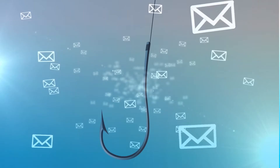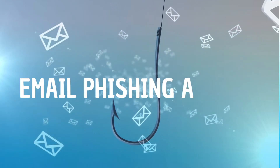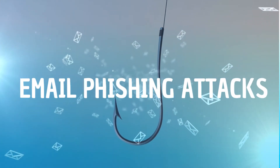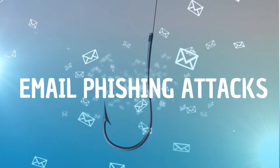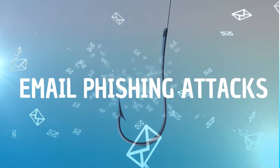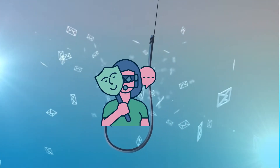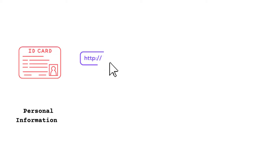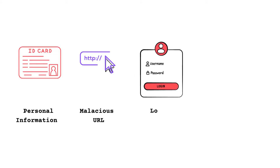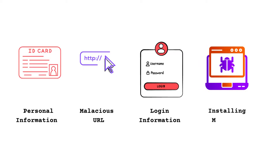Phishing emails are the main source of phishing attacks. Email phishing attacks are attacks in which phishing emails are disguised as legitimate emails to steal personal information, or trick the victim into clicking on a malicious web link, asking for login information or account details, and in some cases installing malware onto the victim's machine.